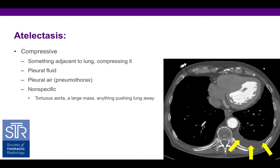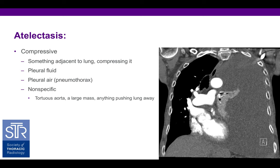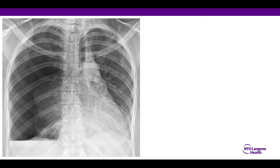Compressive atelectasis simply refers to compressive changes upon the lung because of something adjacent to it — something abutting the lung and pushing it away. Usually this refers to pleural effusion, but you can see it with pneumothorax or anything pushing the lung away. On a coronal view, a large left pleural effusion results in completely airless left lung — complete lung atelectasis purely related to the pleural effusion. Separately, a large right-sided pneumothorax demonstrates significant compression upon the right lung with atelectasis, and compression of the heart and mediastinal structures into the left chest, indicating a tension pneumothorax.